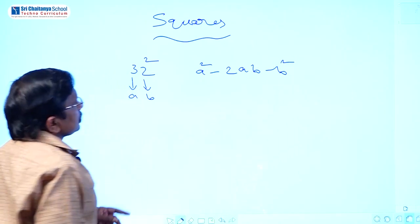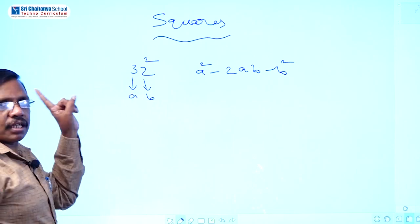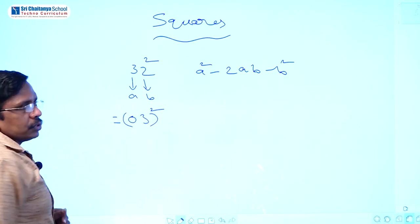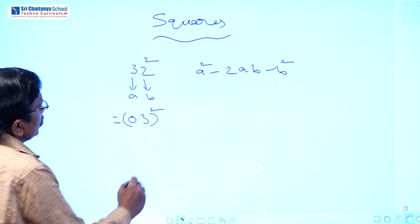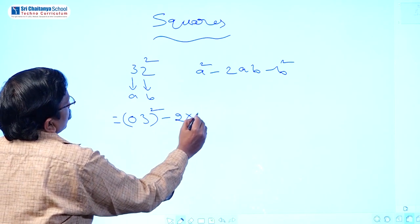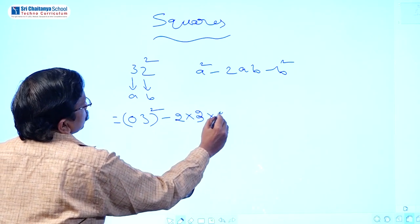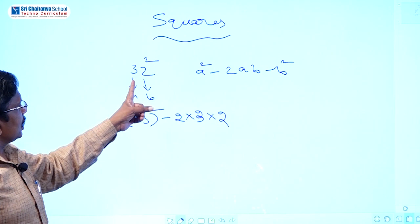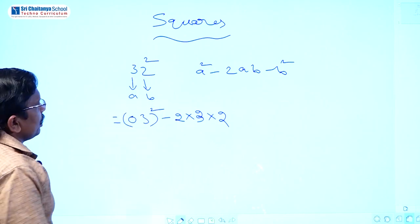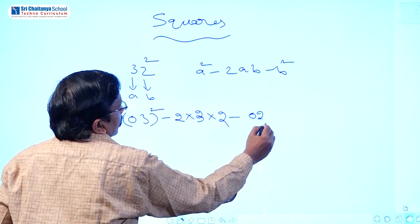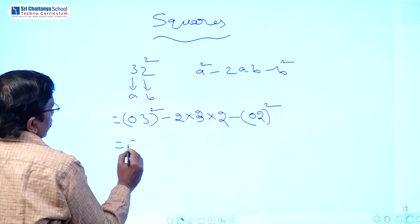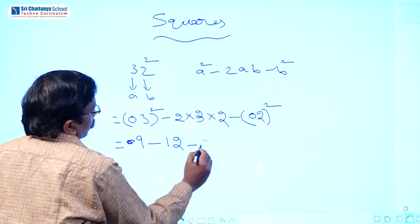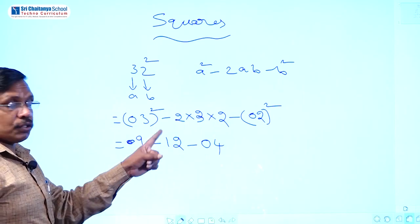So A square means 3 squared equals 09. Then 2 into A into B means 2 into 3 into 2 equals 12. And B square means 2 squared equals 04. After balancing: 4 as it is, then 0 plus 2 equals 2, then 1 plus 9 equals 10, write 0 carry 1. Then 1 plus 0 equals 1. So 32 squared equals 1024.